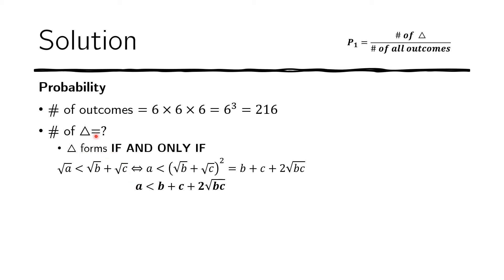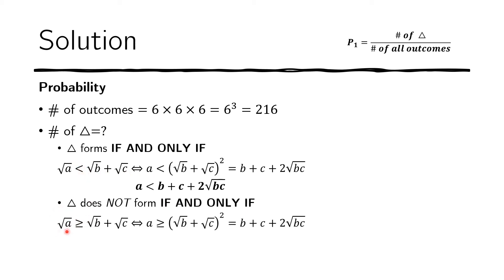Equivalently, a triangle does NOT form if and only if √A ≥ √B + √C, which after squaring becomes A ≥ B + C + 2√(BC). So if this inequality is satisfied, we do not have a triangle. The next step is to look at the possible outcomes and determine when a triangle fails to form, starting with the worst case scenario.